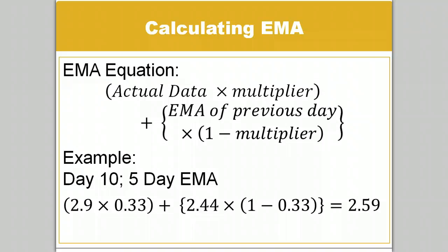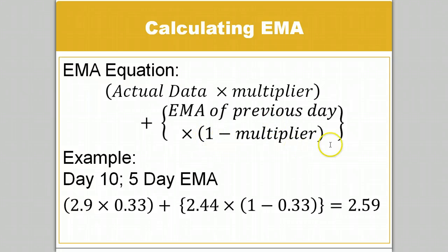Once you have calculated the multiplier, you can calculate your EMA. This is based on the assumption that you have the EMA of the previous day. If you're just beginning to analyze your data, you can use the SMA of the previous day in place of the previous day's EMA. We're going to calculate the 5-day EMA for day 10. I already know the EMA from day 9, so the formula is: the day's actual data times the multiplier, plus the EMA of the previous day times (1 minus the multiplier). So, 2.9 × 0.33 + 2.44 × (1 − 0.33), which equals 2.59.